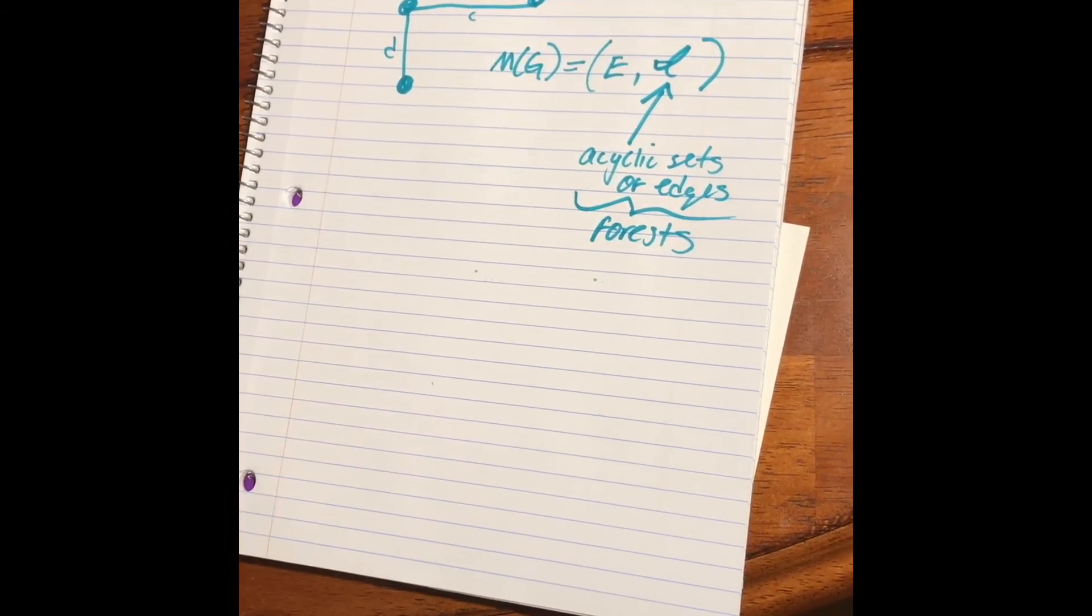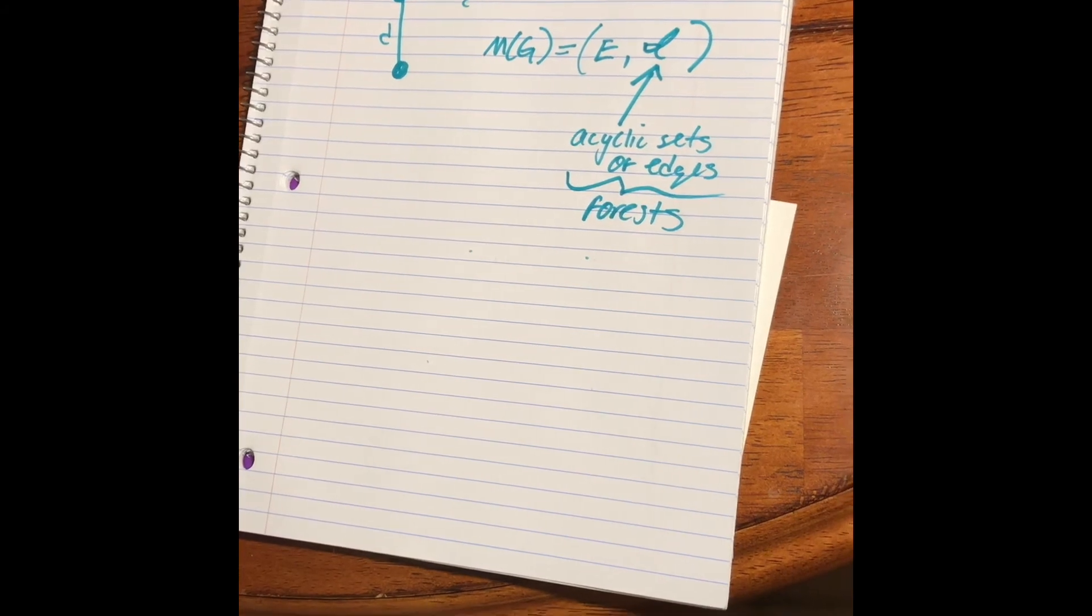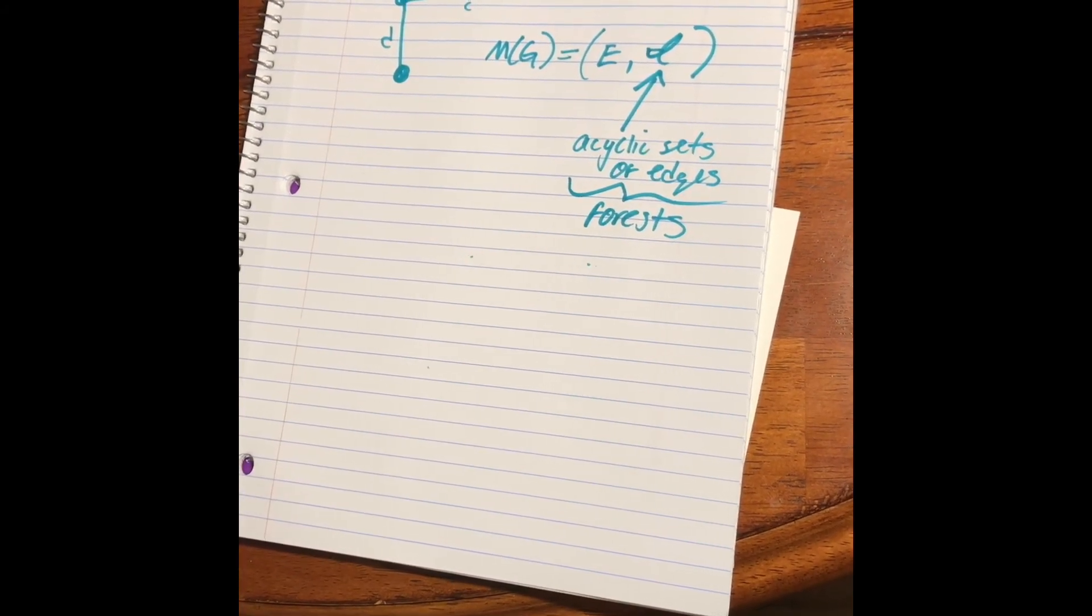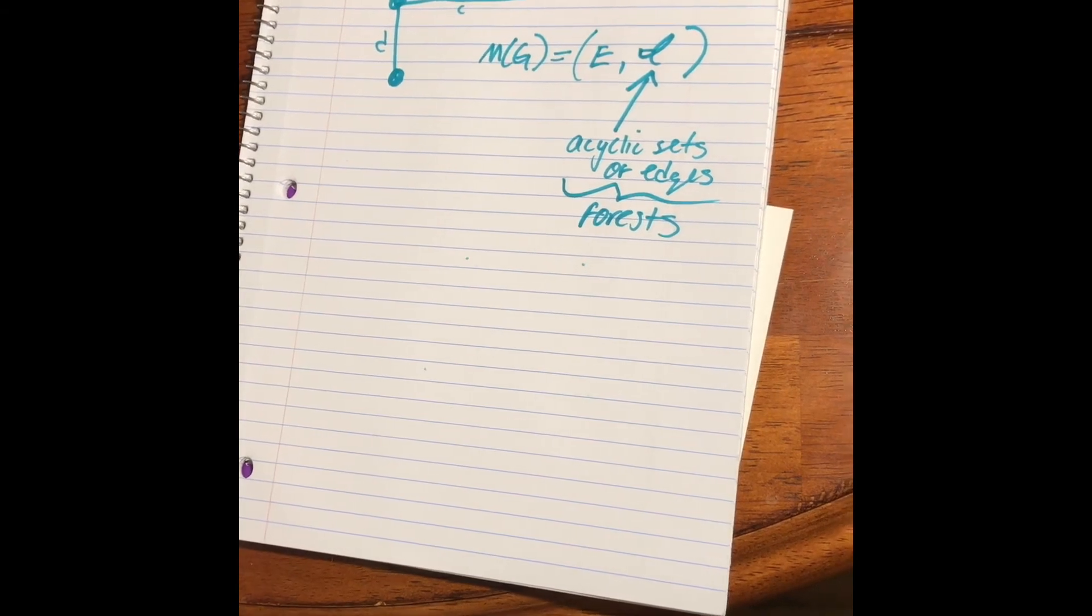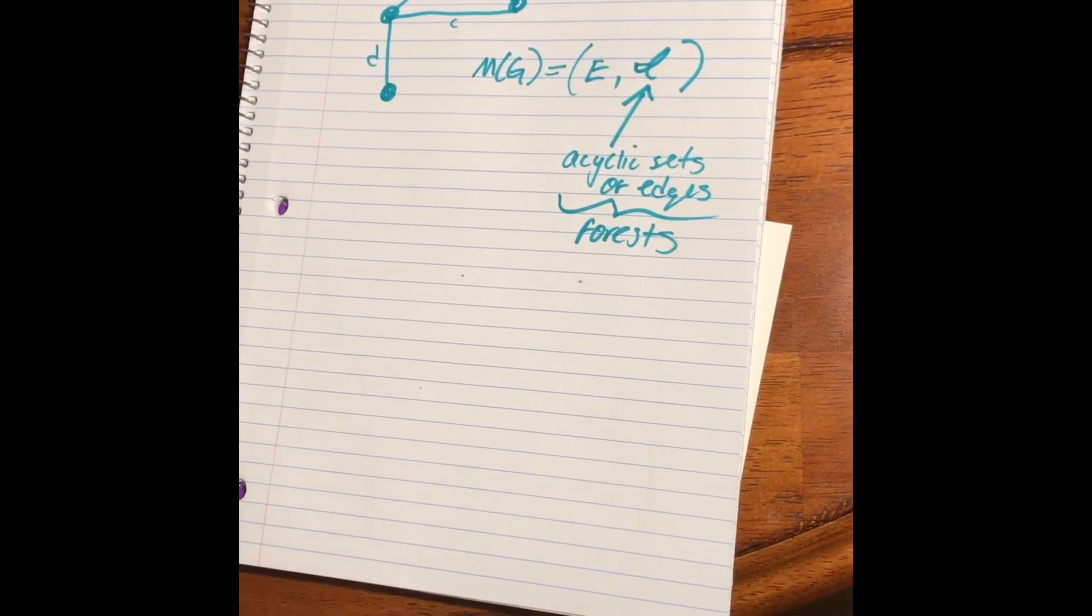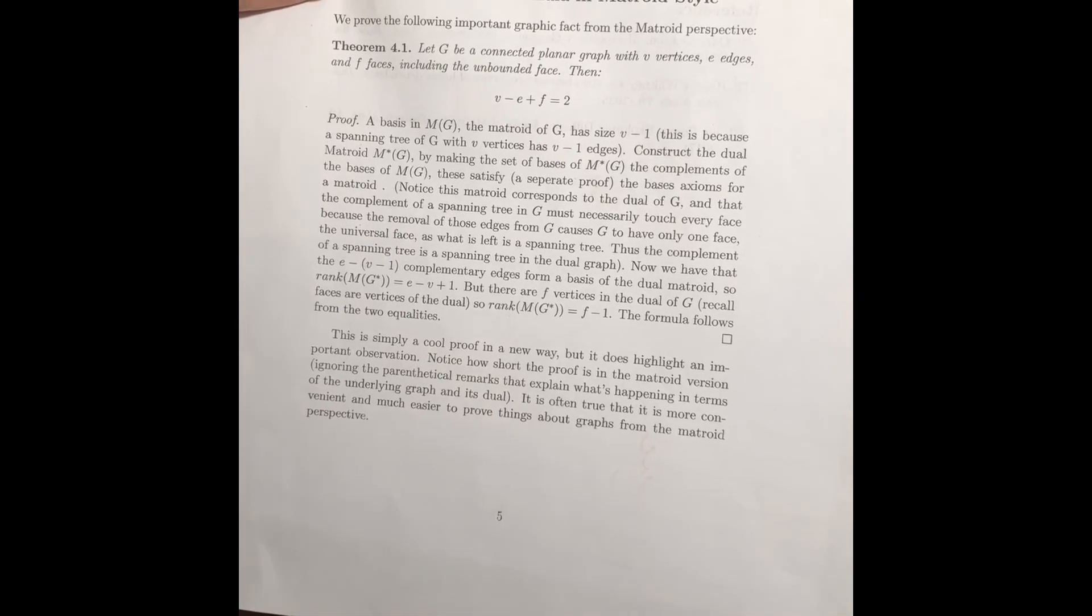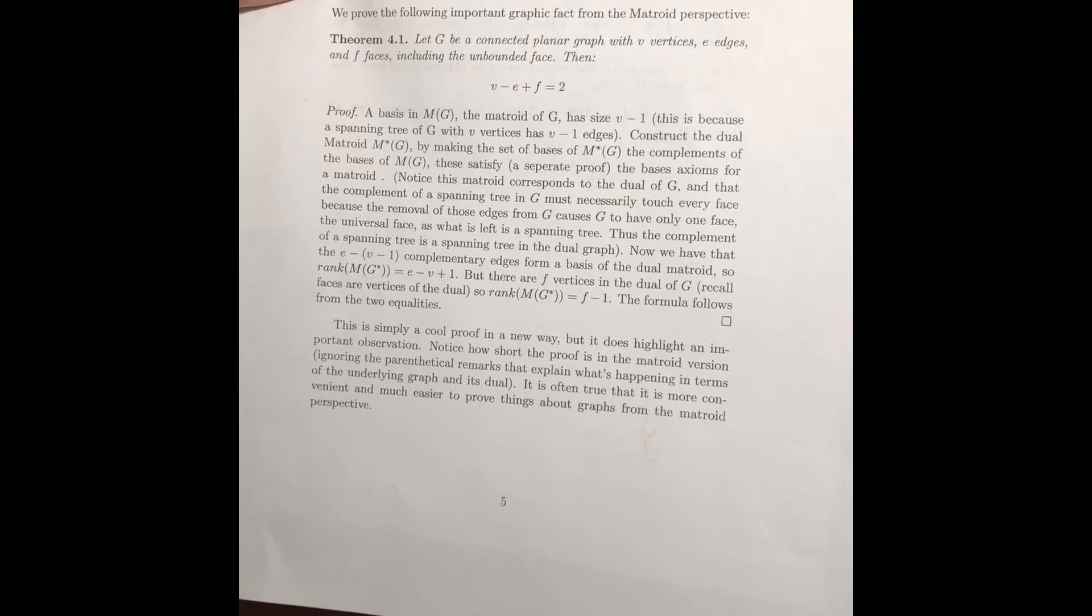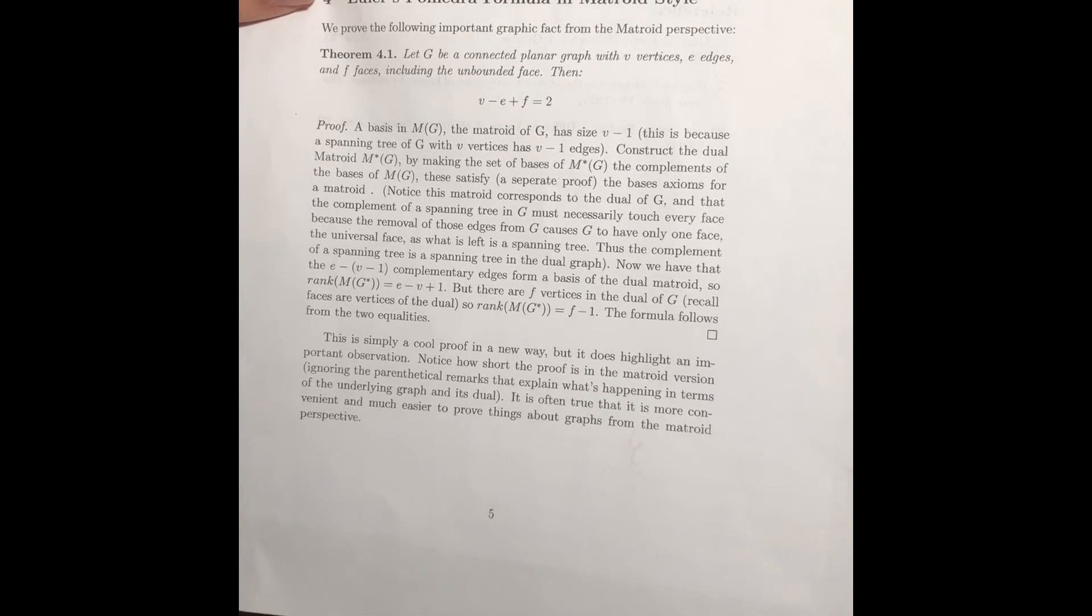And it turns out that this matters because you can often get some basic results pretty easily proved using Matroid theory that take a lot more paper room when you're proving with graphs. And I just give quickly as an example, I'm going to show you this proof that's from a common Matroid book. And it's the proof of Euler's polyhedra formula, v minus e plus f equals two, which is pretty common. And you'll notice I've added some parenthetical remarks in here that tell you how it corresponds in a graph. But without those, this is an extremely short proof, and much shorter than you would need if you were proving it just with graphs.